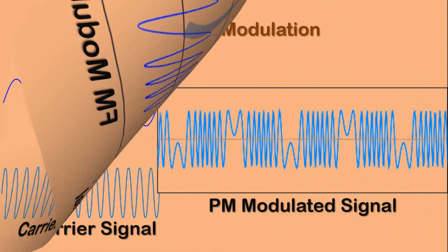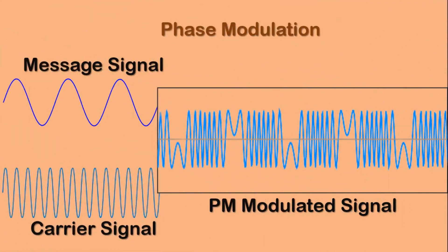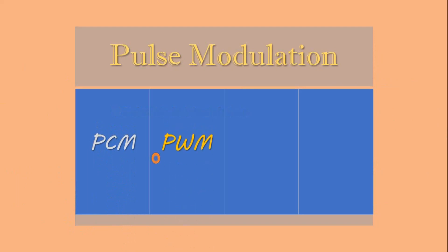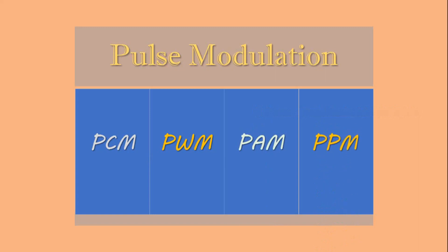In case of phase modulation, the phase of the carrier signal varies according to the message signal. Now let us talk about pulse modulation. There are four different modulation techniques in pulse modulation. The first one is PCM, that is pulse code modulation, and the next one is PWM, that is pulse width modulation.